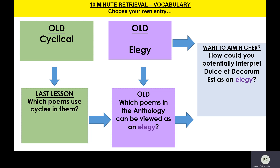The three poems we have studied most recently have cycles — they have this cyclical theme to them. We have To Autumn, with the cycle of the seasons representing the passing of your prime of life into old age and into death. We have Afternoons, where again the passing of afternoon into evening, or summer into autumn, represents the passage of time in these young mothers and how motherhood has aged and changed them. As Imperceptibly as Grief shows this idea of summer into autumn being reflective of the grieving process — again this cyclical process. All three poems use the seasons to show the passing of time.